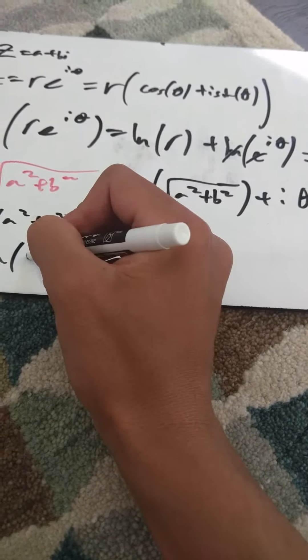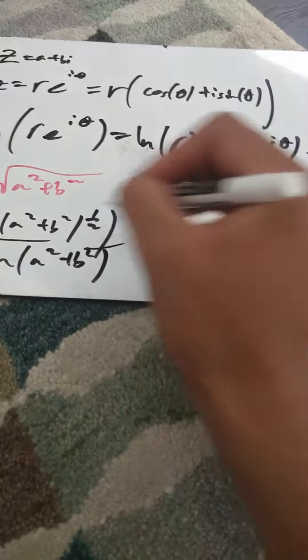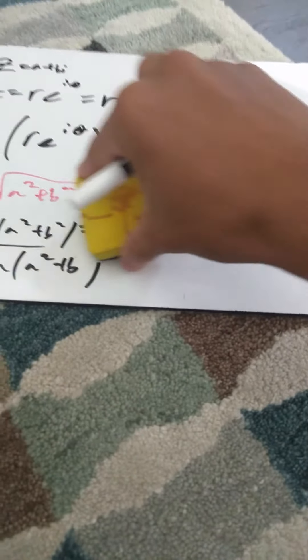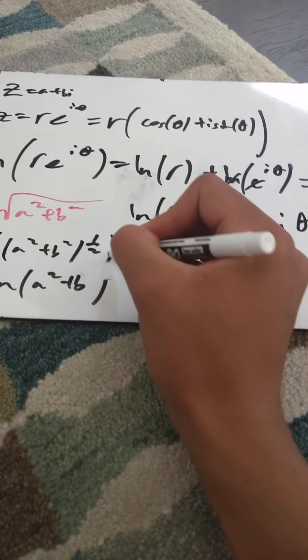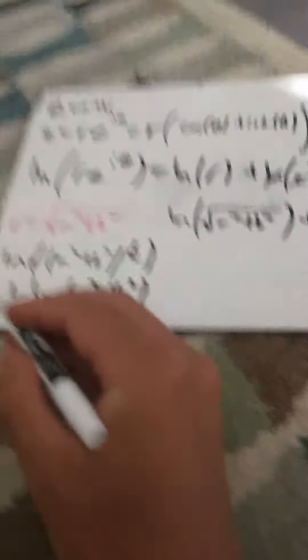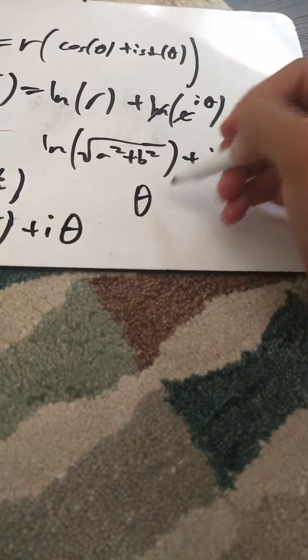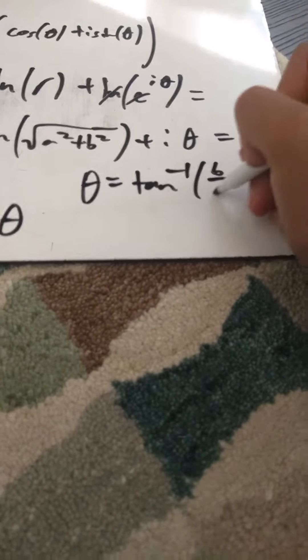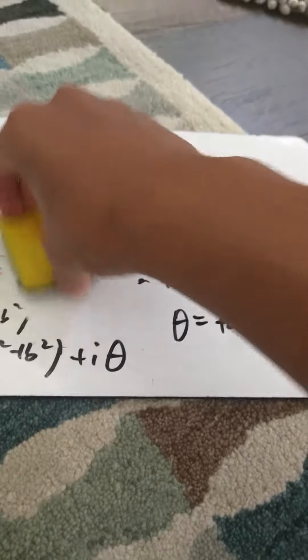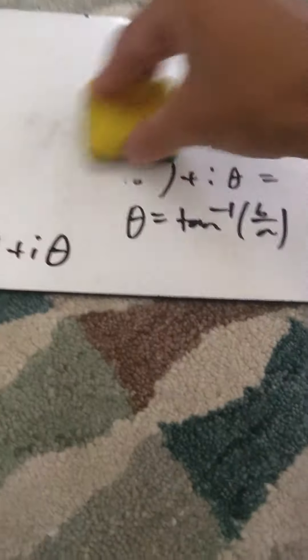We have the natural log of (a² + b²)^(1/2), which can be written as one half ln(a² + b²), and then plus iθ. And θ is defined as the arctangent of b over a. Remember we have z equals a + bi. This is a really easy sort of proof for this, because θ is pretty much meaningless unless we have an actual trigonometric definition for it — which we do: arctangent of b over a.